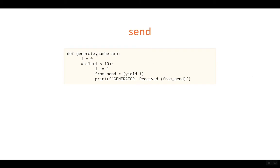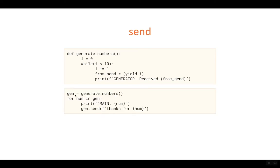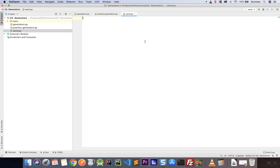Here is a practical example. We have a loop where i is incremented by one each iteration and we yield the value i, but we also receive a value from send. The send method sends a value which is received into a variable called from_send, and then we print a message showing that received value. In the calling loop, we print the generated number and then send a thanks message for that number.